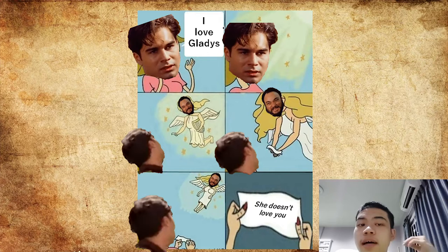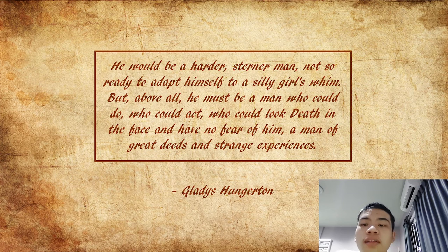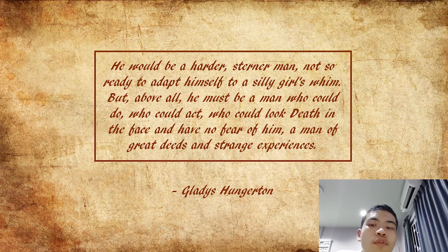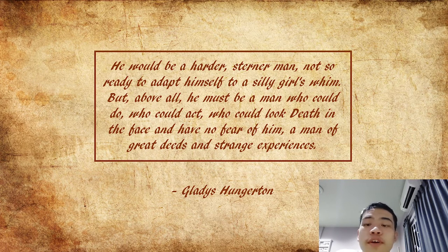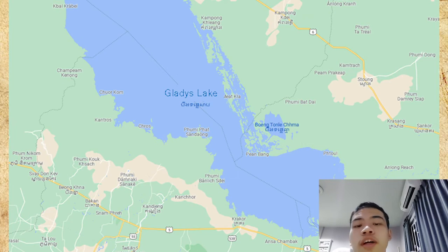In Doyle's book, Edward loves Gladys Hungerton, but if you pay attention, you will see that she doesn't love him at all. As seen from the phrase: 'he would be a harder, sterner man, not so ready to adapt himself to a silly girl's whim — above all, he must be a man who could do, who could act, who could look death in the face and have no fear of him. A man of great deeds and strange experiences.' This seems like an impossible task for Malone, but he still tries. It's pitiful to see how much Edward one-sidedly loves her — he even named a leg bone he found after her. But she didn't care at all, and she even married some other man when Edward finally fulfilled all the conditions she had given.